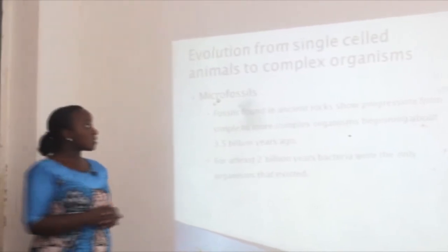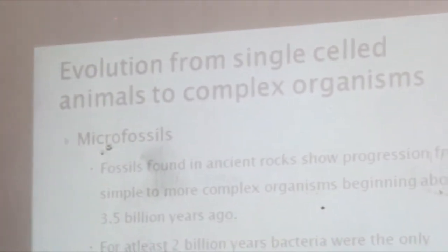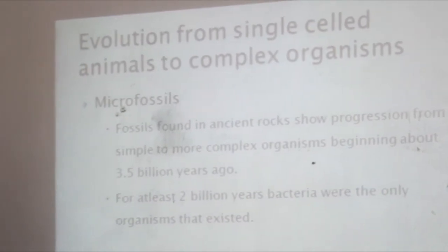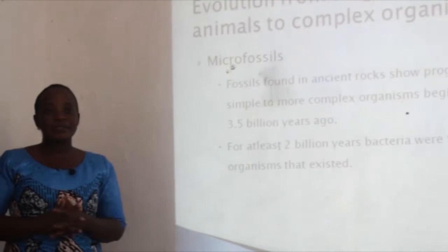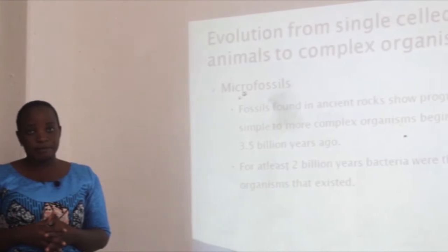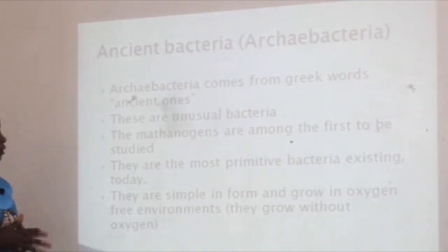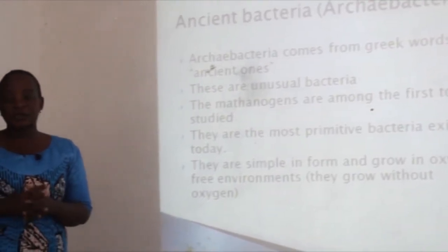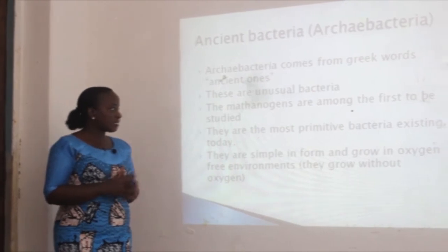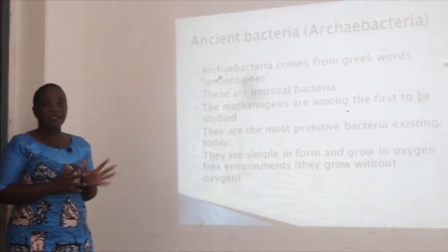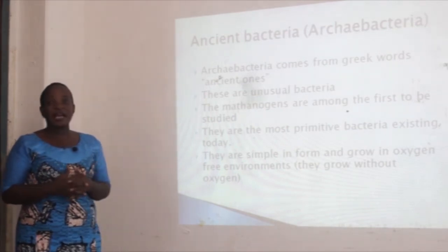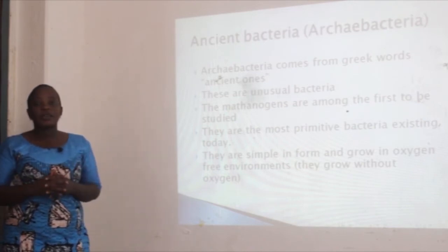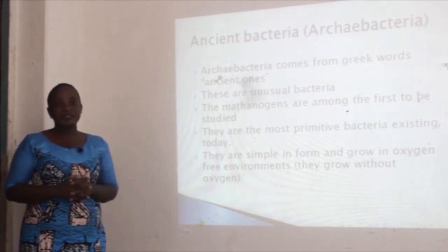Evolution from simple to complex animals: microfossils — whole cells found in ancient rocks — show progression from simple to more complex organisms beginning about 3.5 billion years ago. For at least 2 billion years, bacteria were the only organisms that existed. The archaea, a word from Greek meaning ancient ones, are unusual bacteria. For example, the methanogens are methane-producing bacteria, among the first bacteria to be studied and the most primitive bacteria that exist today.